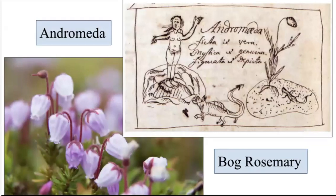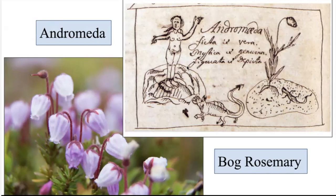Linnaeus' plant grouping Monoecia, meaning one house, was so named because in these plants, and this is a quote, 'husbands live with their wives in the same house, but have different beds.' These are plants we're talking about here. The class Polygamia Aequalis, Latin for equal polygamy, was so designated by Linnaeus because he determined reproduction to consist of, and once again this is a quote, 'many marriages with promiscuous intercourse.' Linnaeus was still talking about plants there.